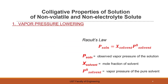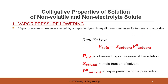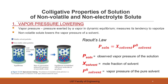Let's start with vapor pressure lowering. Vapor pressure is the pressure exerted by a vapor in dynamic equilibrium, and it measures the tendency to vaporize. A non-volatile solute lowers the vapor pressure of a solvent. The presence of non-volatile solute particles in a liquid solvent results in a reduction of the vapor pressure above the liquid. Raoult's law relates the observed vapor pressure of the solution to the mole fraction of the solvent and the original vapor pressure of the pure solvent.